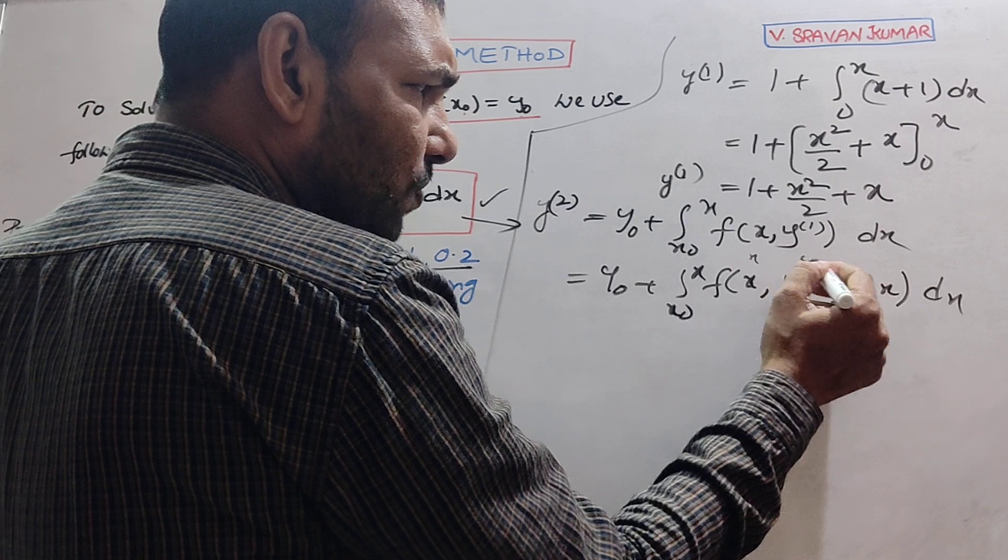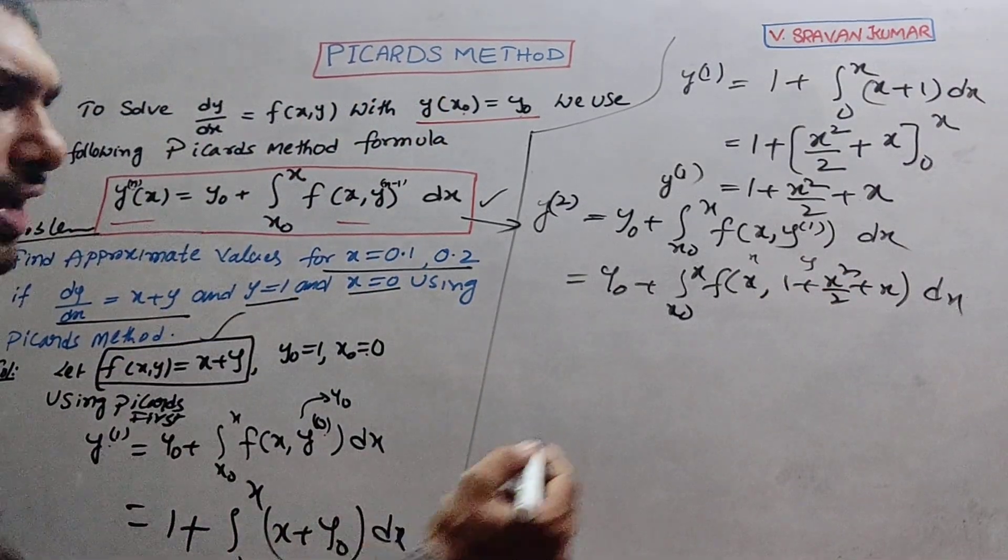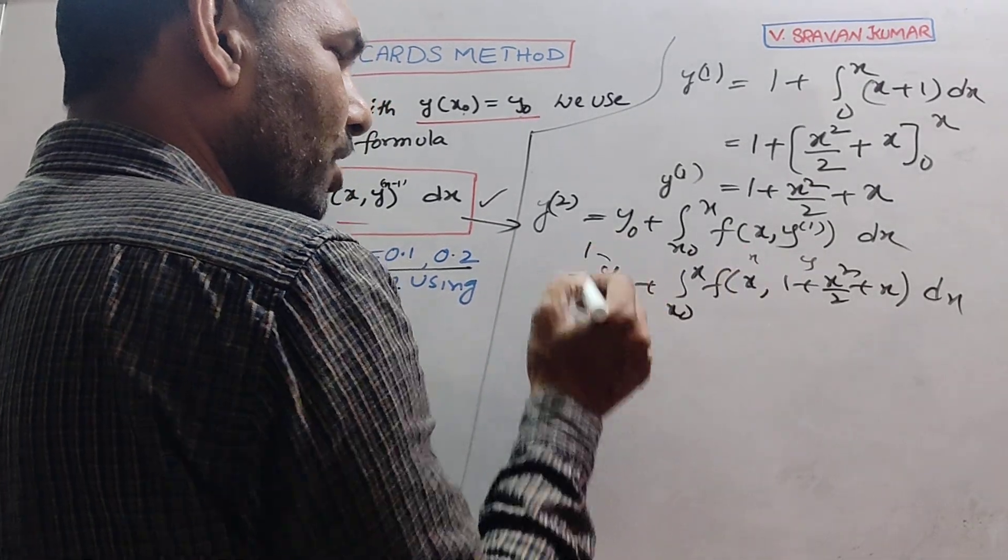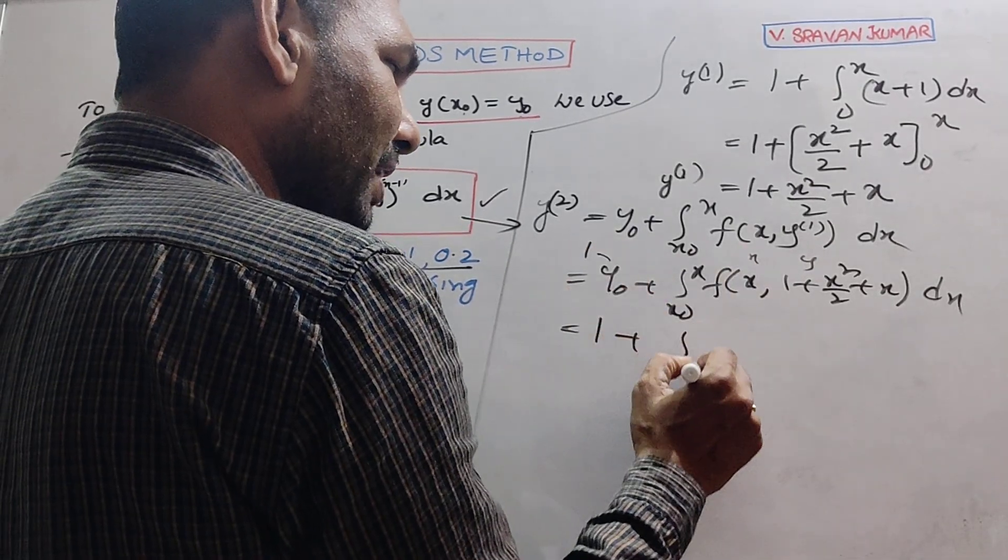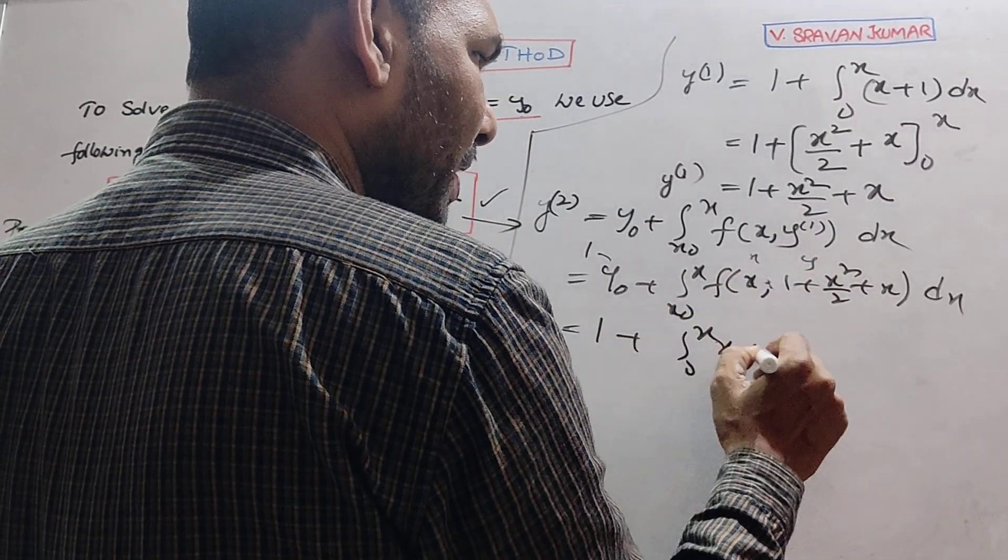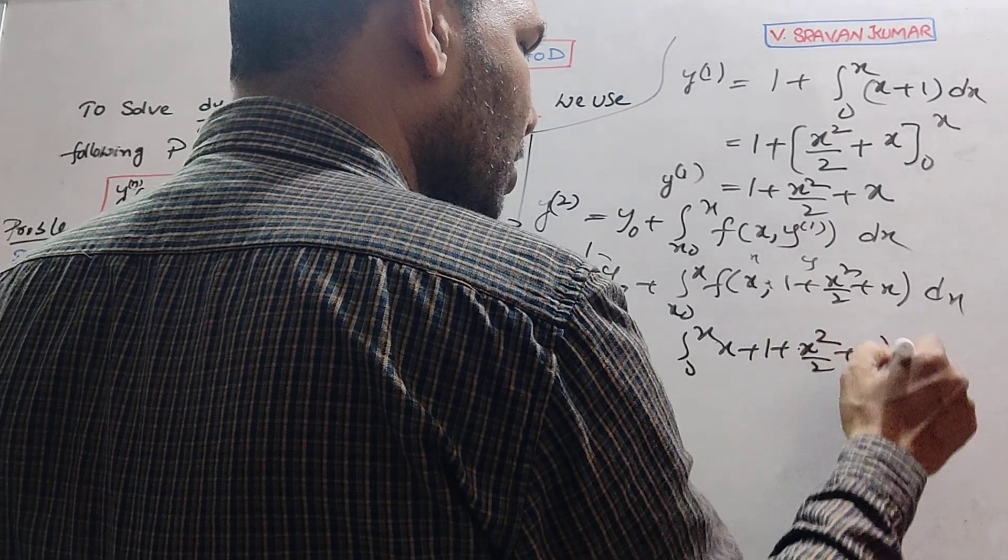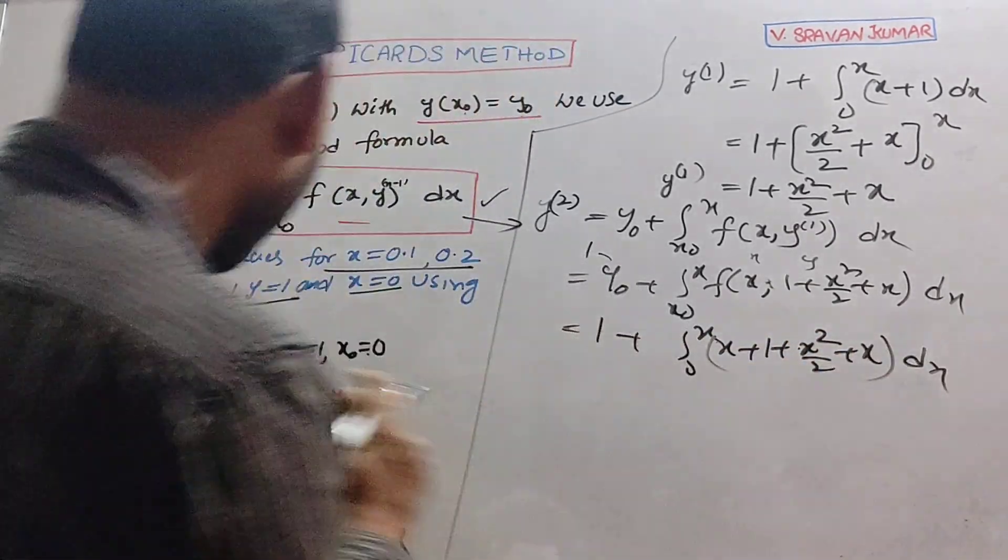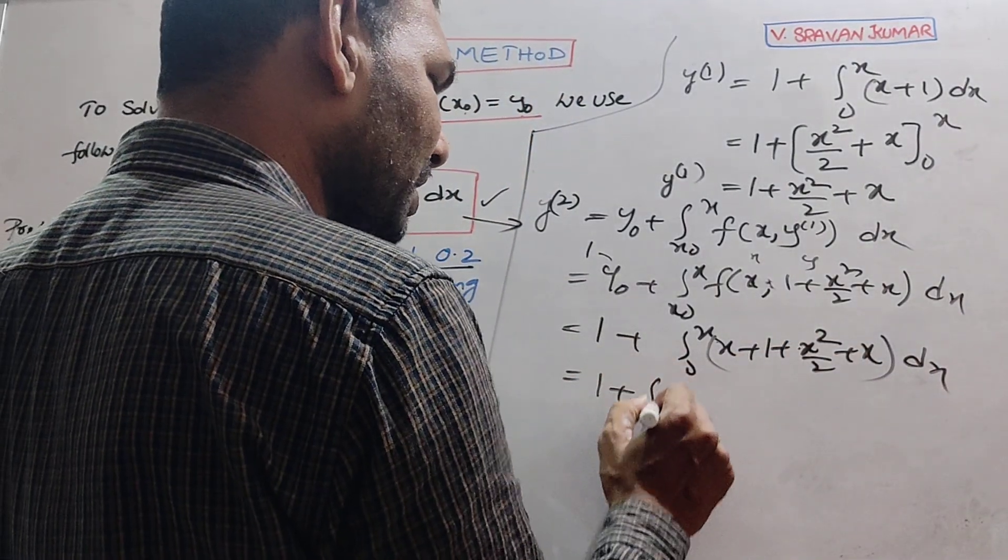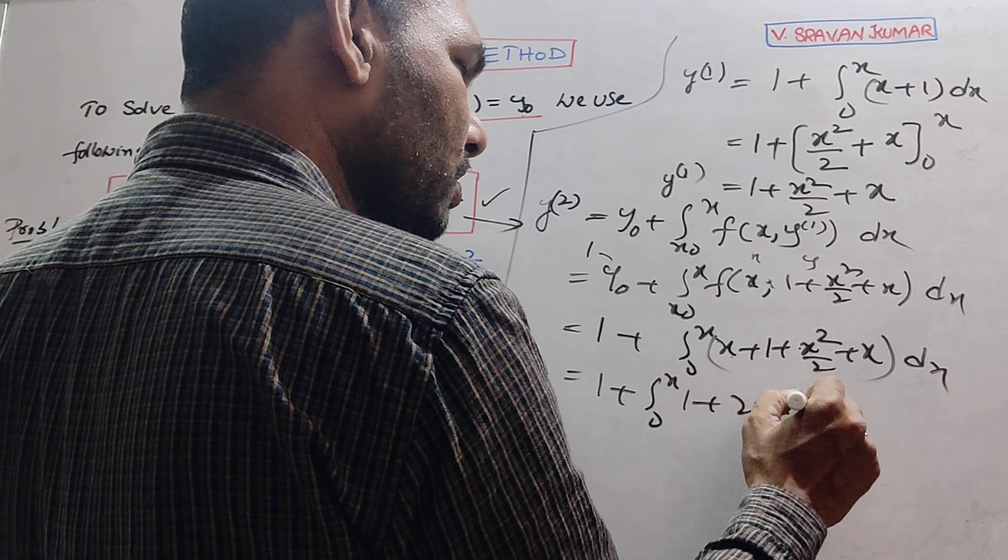And then this one as y₀ plus 1, so 1 plus integral 0 to x, this one as x plus (1 + x²/2 + x). Plus x plus 1, f(x,y) is x plus y. So simplify this one: 1 plus integral 0 to x, where 2x plus 1 plus x²/2.